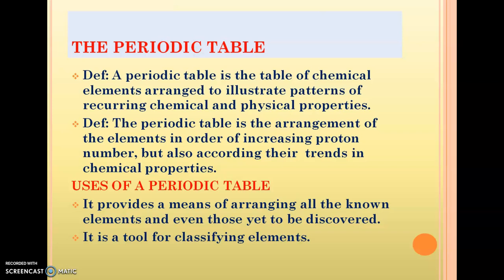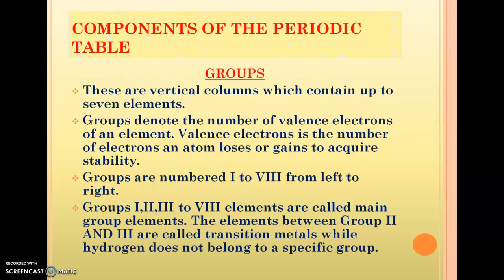So you can go by the second one. What are the uses of a periodic table? The periodic table is simply a tool that we use for classifying elements. To classify means to group or to categorize. The elements are categorized or grouped according to their reactivity and according to the proton numbers that they have.